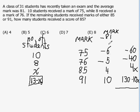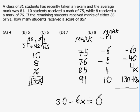We know the average mark is 81, so if I subtract 81 from all their marks, the average of these new values will be zero — meaning the sum of the deviations must equal zero. So: 130 minus 60 minus 40 equals 30, and minus 10X plus 4X equals minus 6X. Setting 30 minus 6X equal to zero gives X equals 5.